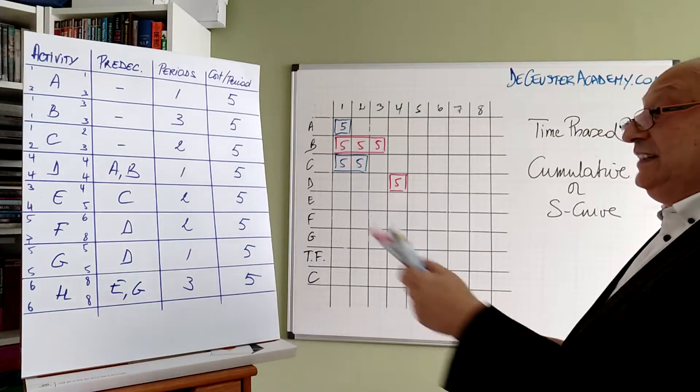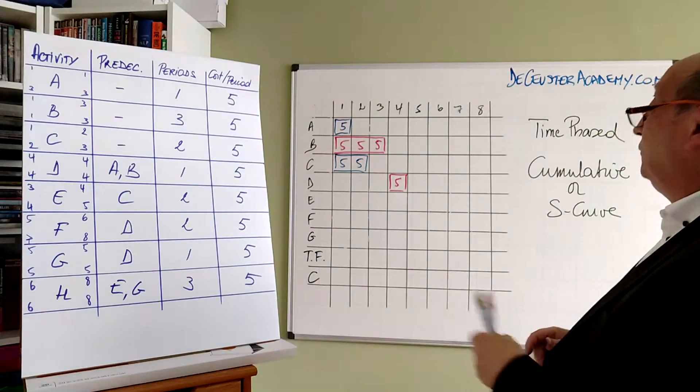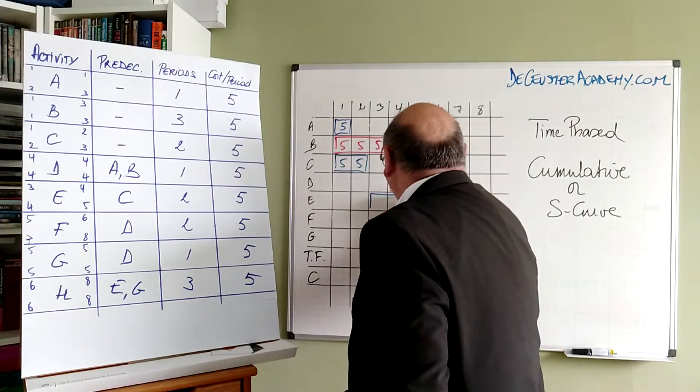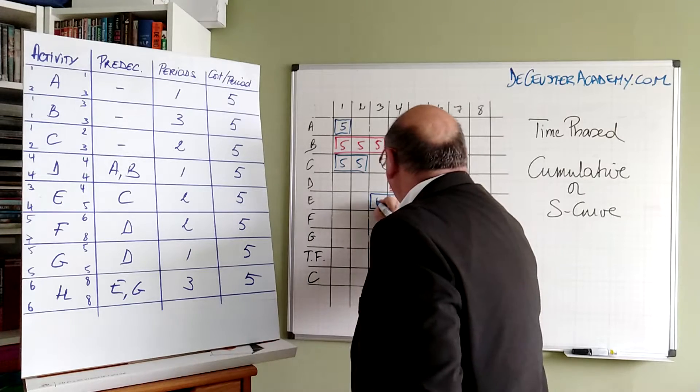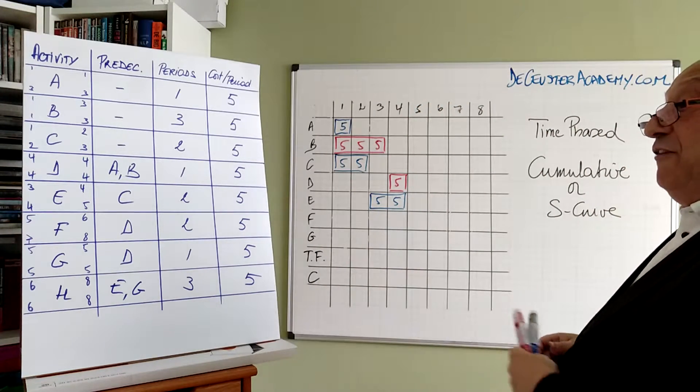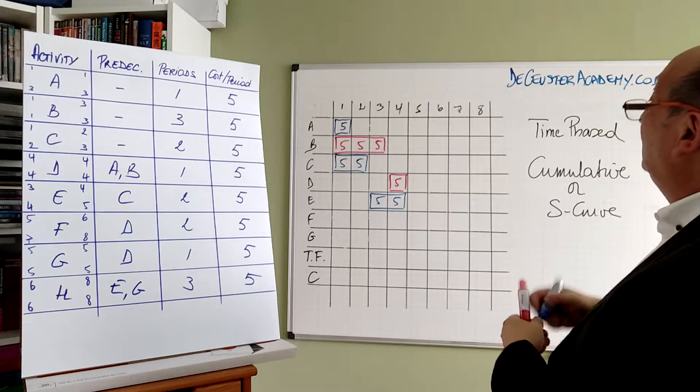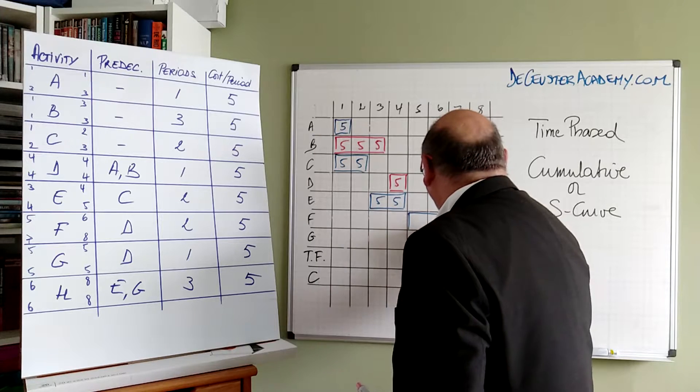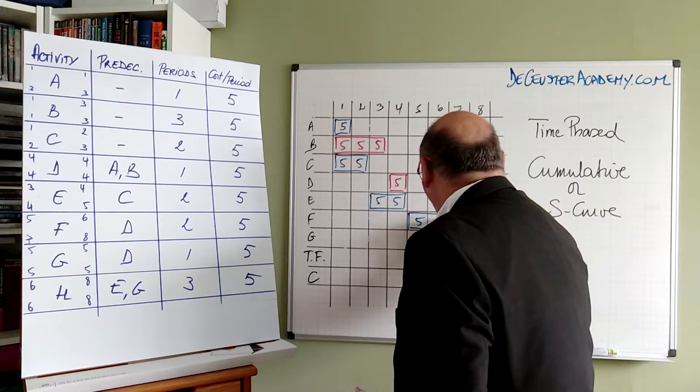Then we have activity E from 3 to 4. So we have E here, again with 5 and 5. Activity F is from 5 till 6. It's not critical, so we have 5 till 6, with 5 and 5.